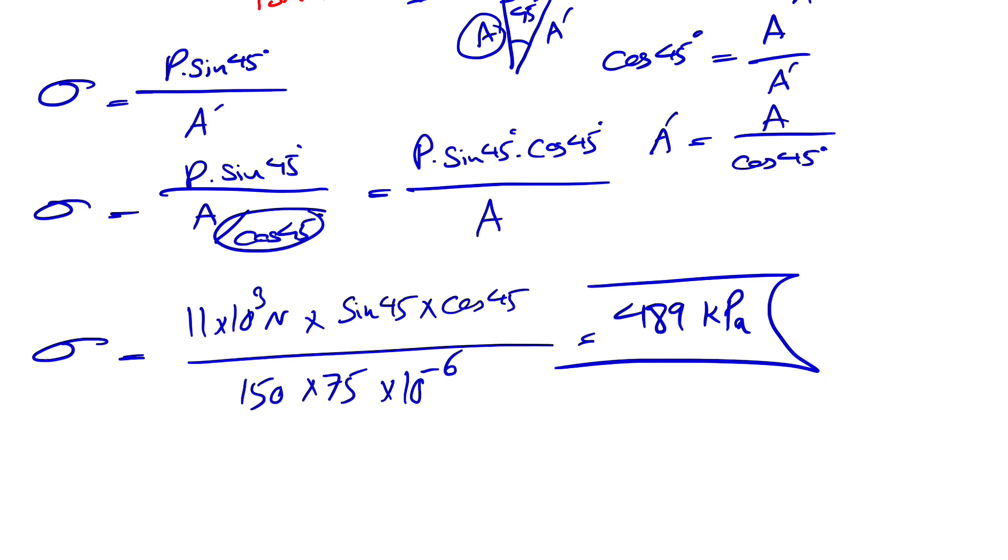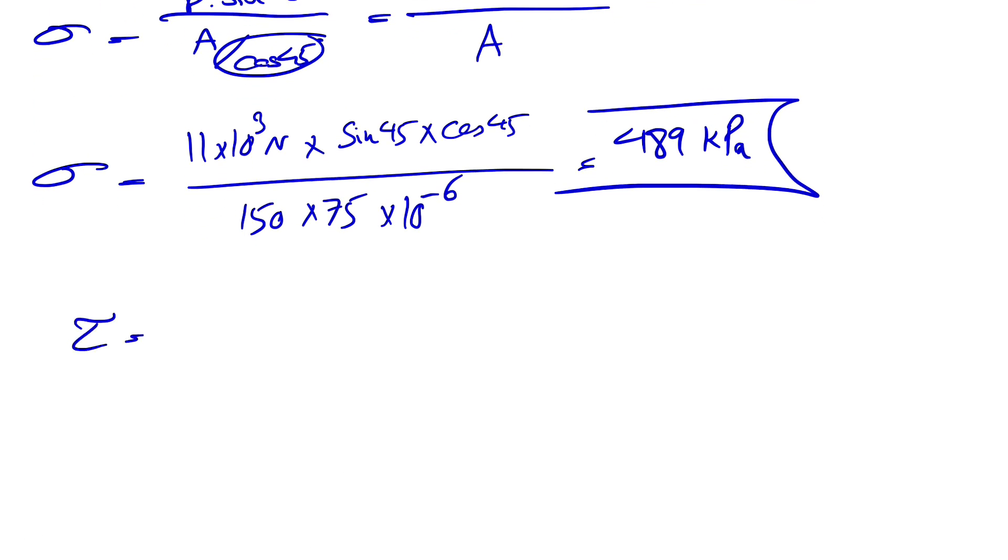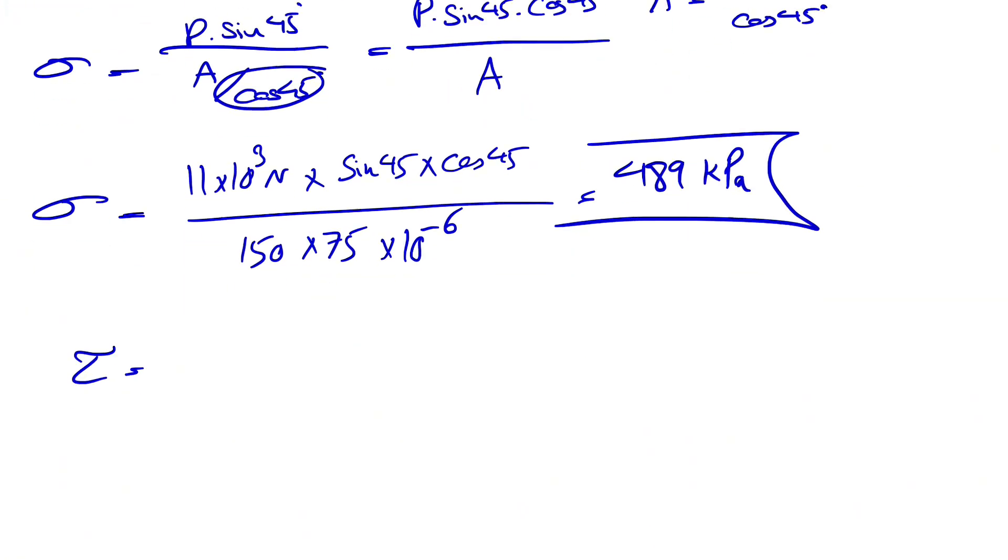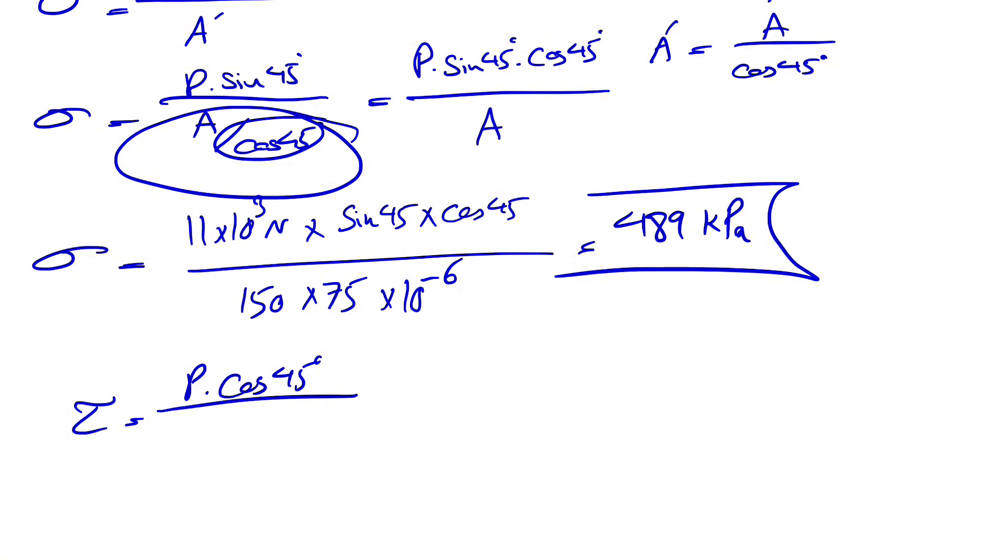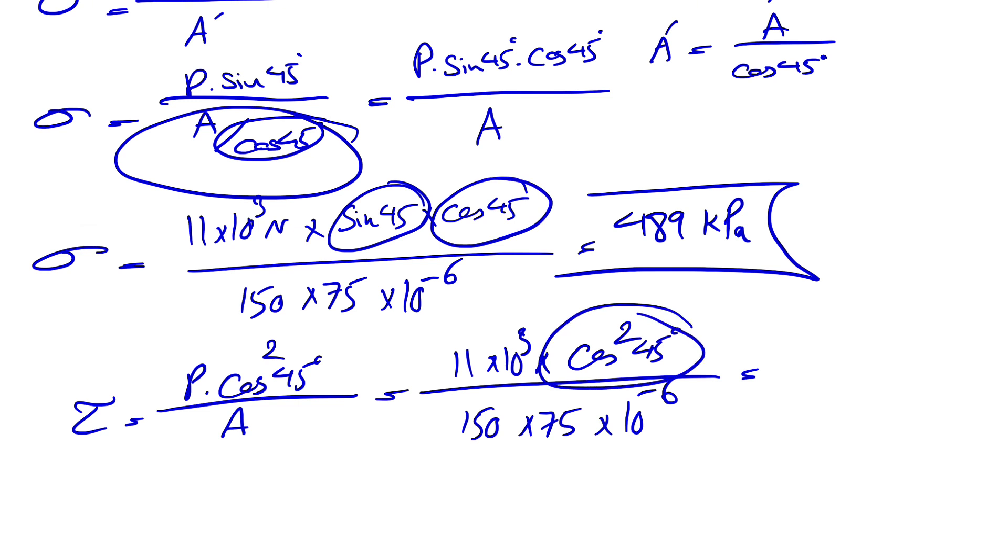If you want to find the shearing stress, we have a different force in here. This time our force is P cosine of 45 degrees. And the area that we have is same as what we had before, A over cosine of 45. Cosine of 45 can go to the top. So this will be squared, and we have A in here. Again, P is 11 times 10,000 times cosine of 45 degrees. And we have the same area in here, 150 times 75. As I mentioned, we know the value of sine and cosine are the same. So basically, cosine squared is the same as what we got for normal stress. We don't need to calculate it again. So 489 kilopascal. Same answer for both of these two.